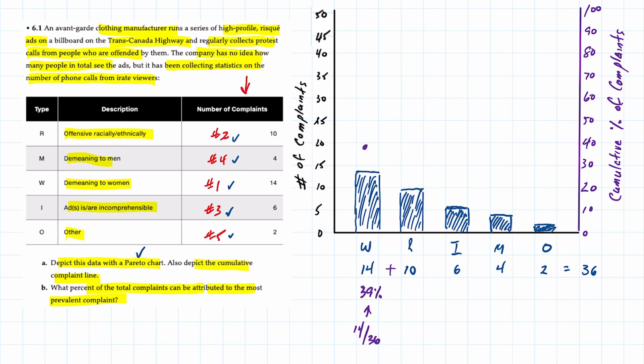Then we add the next highest type of complaint to give us a total of 24. When we take 24 divided by 36 that's a cumulative of about 67 percent. So looking at our chart let's say it's somewhere about there.